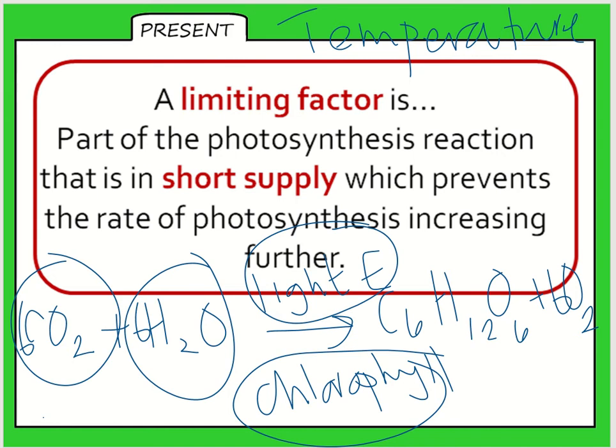What limiting means is that it does not matter if you have a massive supply of all of those things. If there is not any light or not enough light, then photosynthesis will slow down, the rate of it will slow down, the rate in which the oxygen is produced in bubbles, which you saw in the practical that you just did.